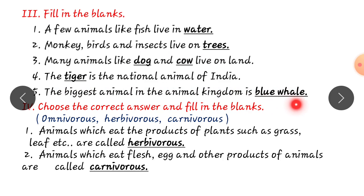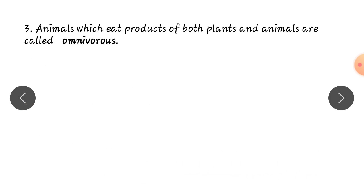Animals which eat the products of plants are herbivores. Animals which eat flesh, egg and other products of animals are called carnivores. And animals which eat the products of both plants and animals are called omnivores. I am asking questions.